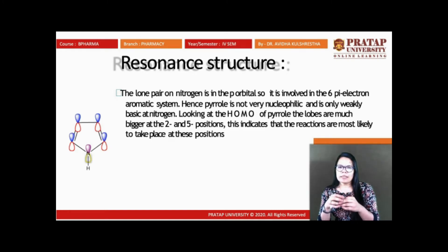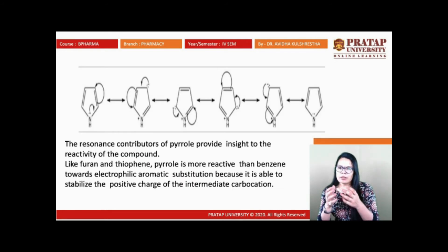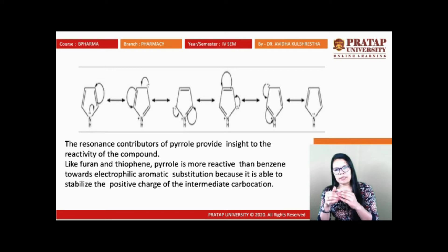Looking at the HOMO of pyrrole, the lobes are much bigger at the 2 and 5 positions, indicating that reactions most likely take place at those positions. In the resonating structures of pyrrole, electron shifting goes from position 1 to 2, then 2 to 3, then 3 to 4. The maximum negative charge is generated at positions 2, 5, 3, and 4, but maximum electron density and stability is at the 2 and 5 positions. The resonance contributors of pyrrole provide insight into its reactivity.